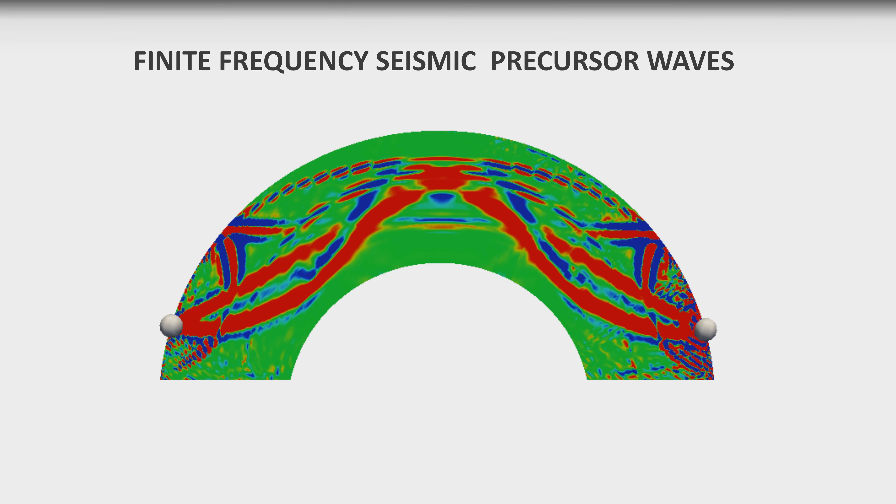However, waves are not really rays. They have a thicker path of traveling inside the Earth, which can be taken care of using adjoint kernels and full waveform inversion.